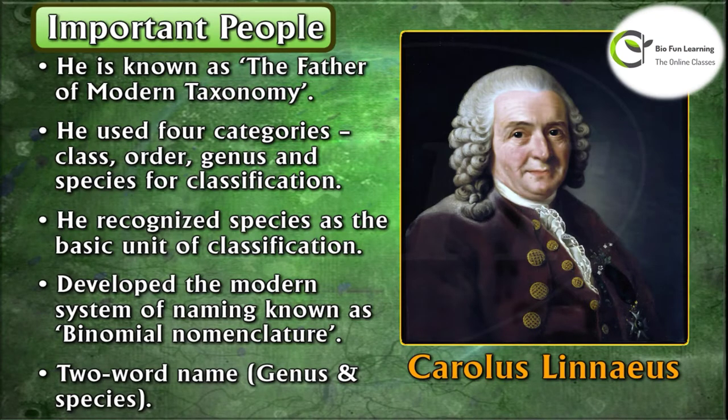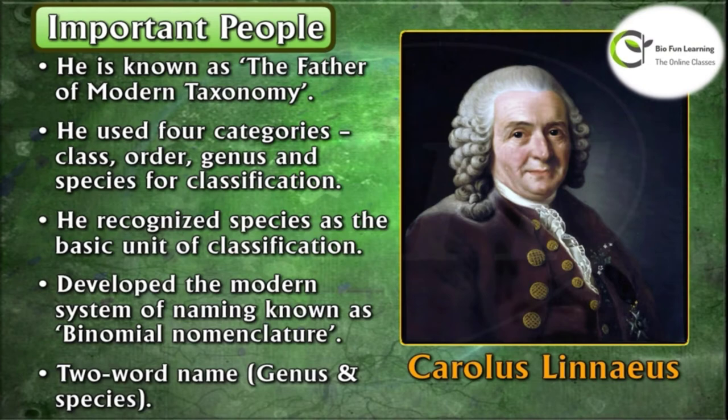After that, Carolus Linnaeus had a major contribution in the classification of living organisms. He is known as the father of modern taxonomy. He used four categories — class, order, genus, and species — for classification, and recognized species as a basic unit of classification. He developed the modern system of naming known as binomial nomenclature, a two-word name consisting of genus and species. The Linnaeus method is also known as Linnaean taxonomy.